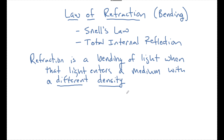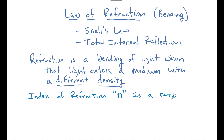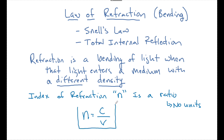We can calculate this density quantitatively by looking at a medium's index of refraction. The index of refraction has a variable symbol of lowercase n and it is a ratio — and ratios have no units. It's a ratio of the speed of light in a vacuum compared to the speed of light traveling through that medium. This is a formula you need to memorize if you're taking something like SAT physics.